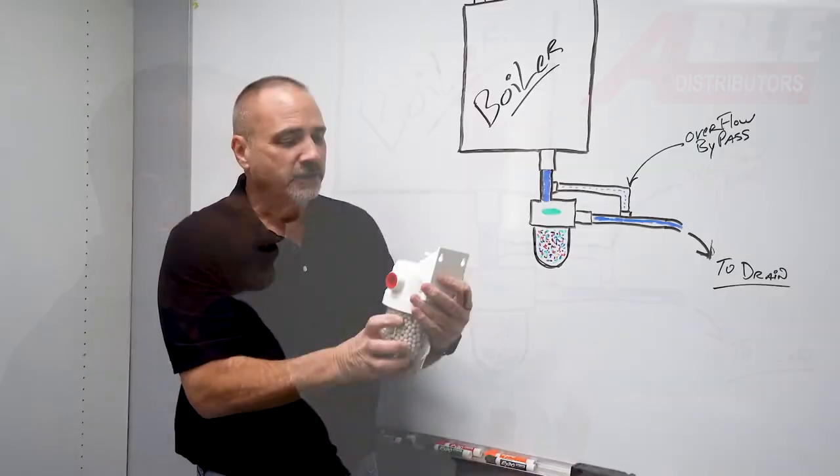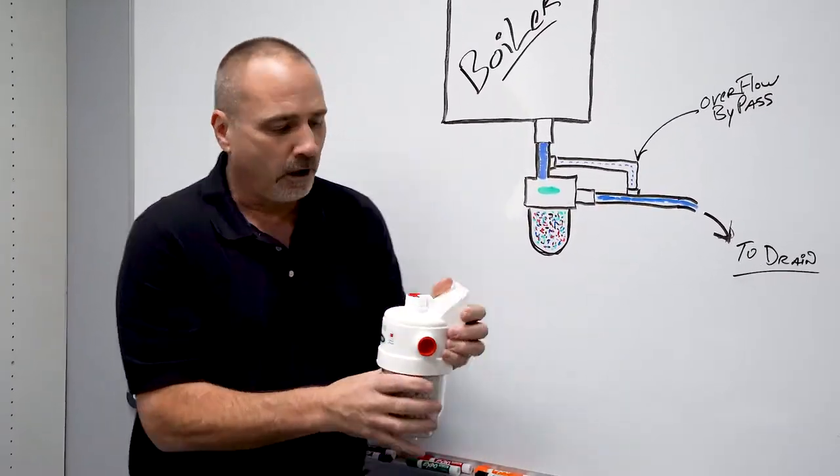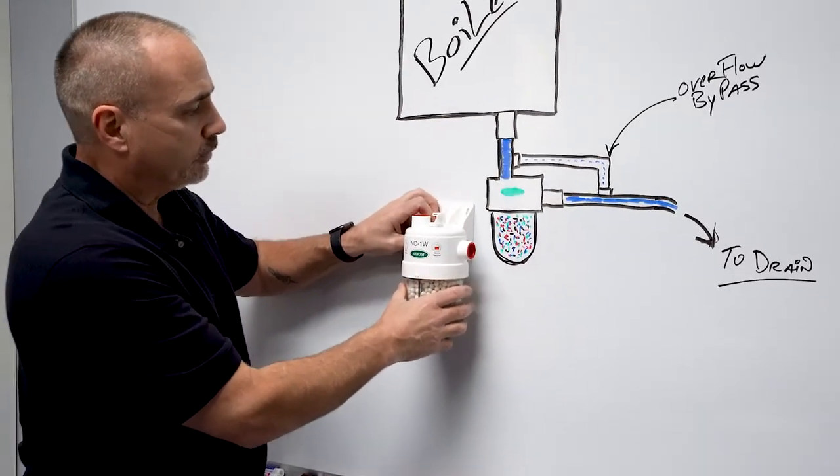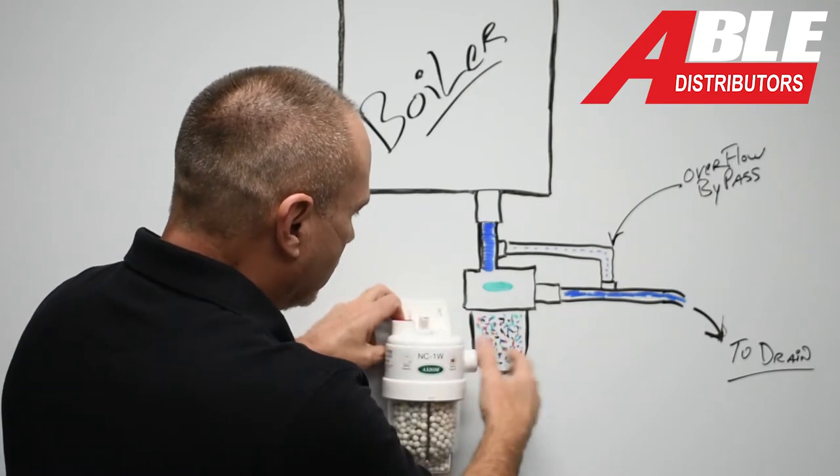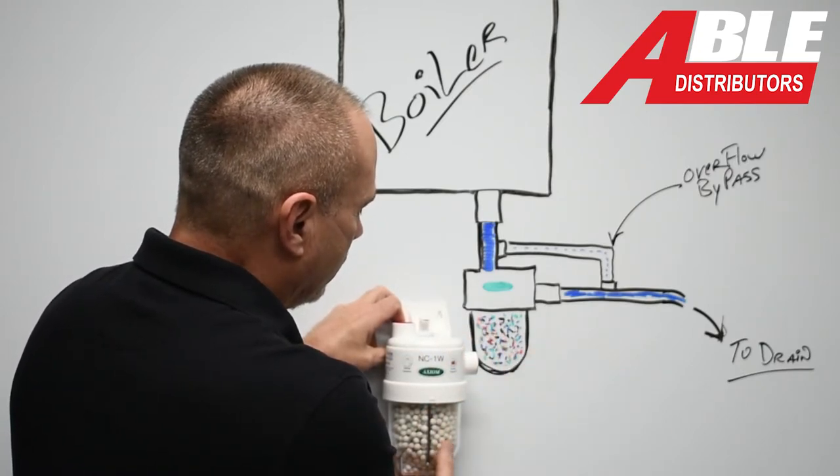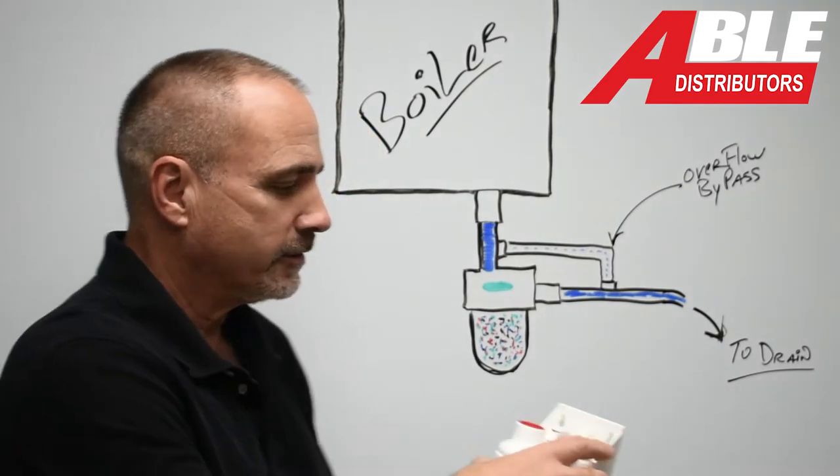It's super slick, very well made, easily mounts to the wall. You can put it right below your boiler or your tankless. You don't have to glue all those things to service it. It's just unscrew the bottom.